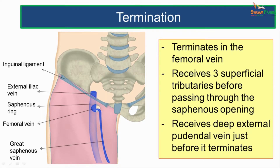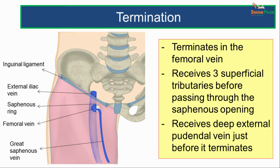The great saphenous vein, as seen in the upper part of the thigh, passes through the saphenous opening, pierces the cribriform fascia, and goes deeper to drain into the femoral vein — so it terminates in the femoral vein. It receives three superficial tributaries just before passing through the saphenous opening, and once through, it receives the deep external pudendal vein just before terminating by opening into the femoral vein.